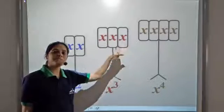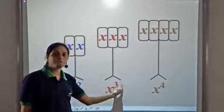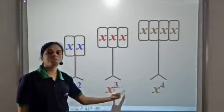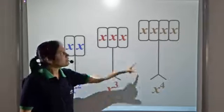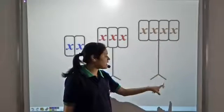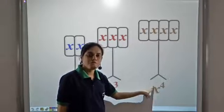Here x multiplies with itself three times and it acquires a power of 3. So we call it x cube or x to the power 3. Here x multiplies with itself four times and acquires a power of 4. So this is x to the power 4.